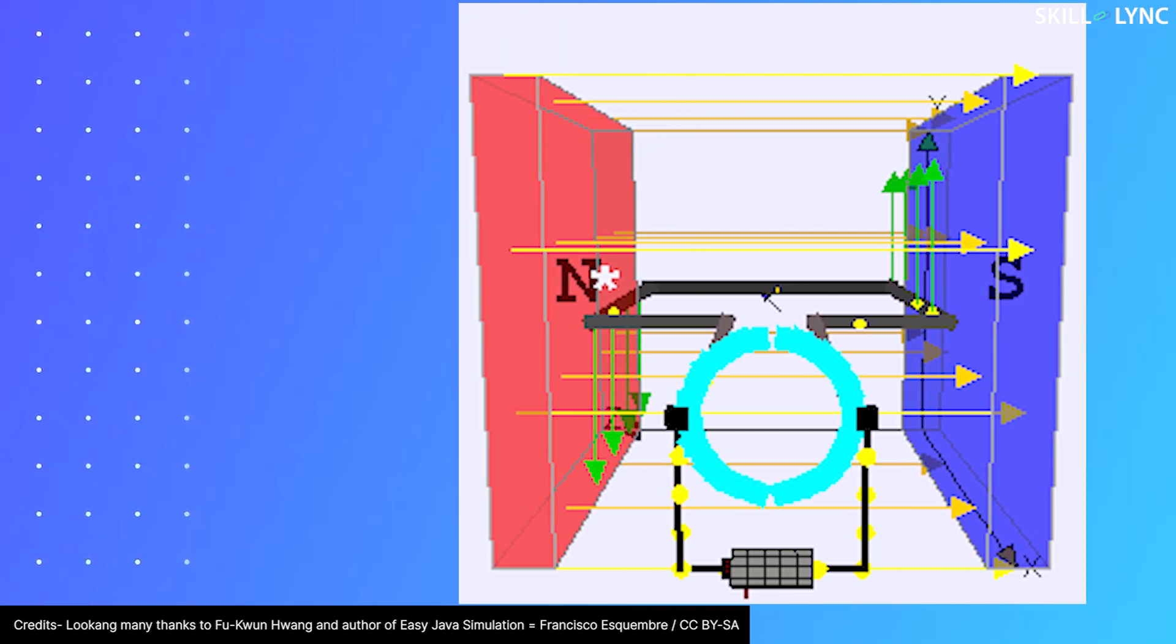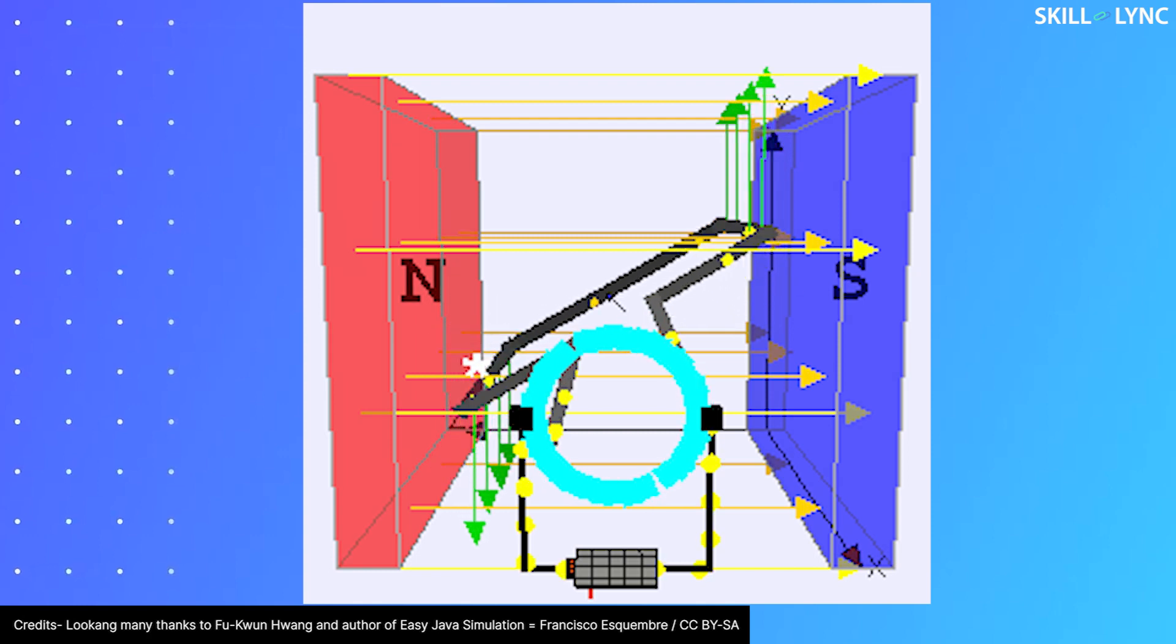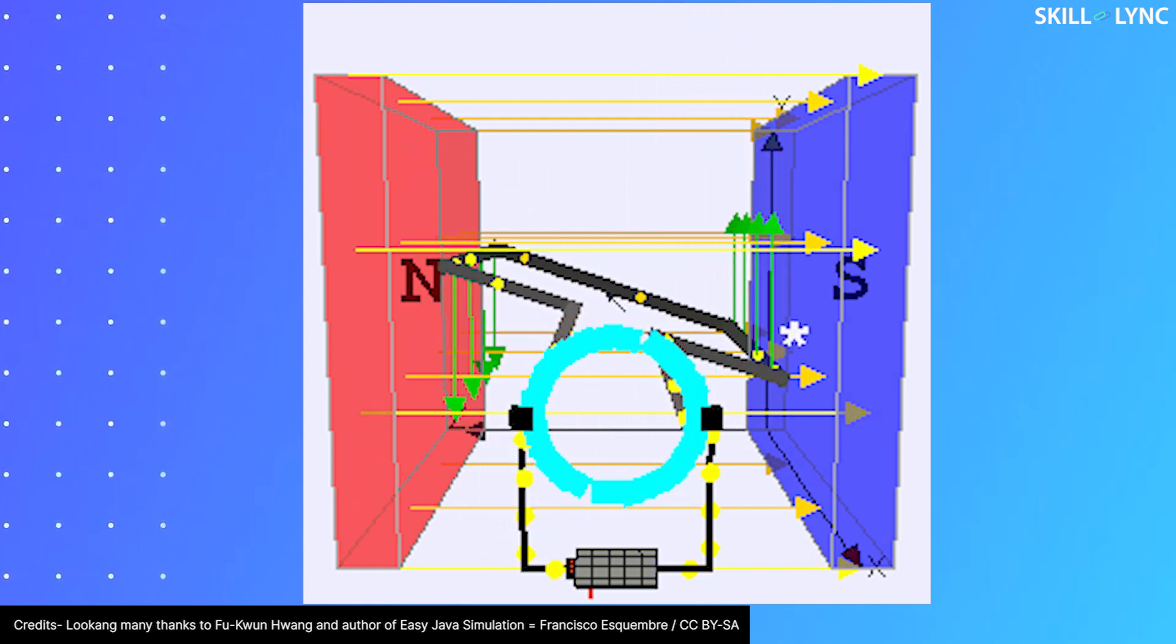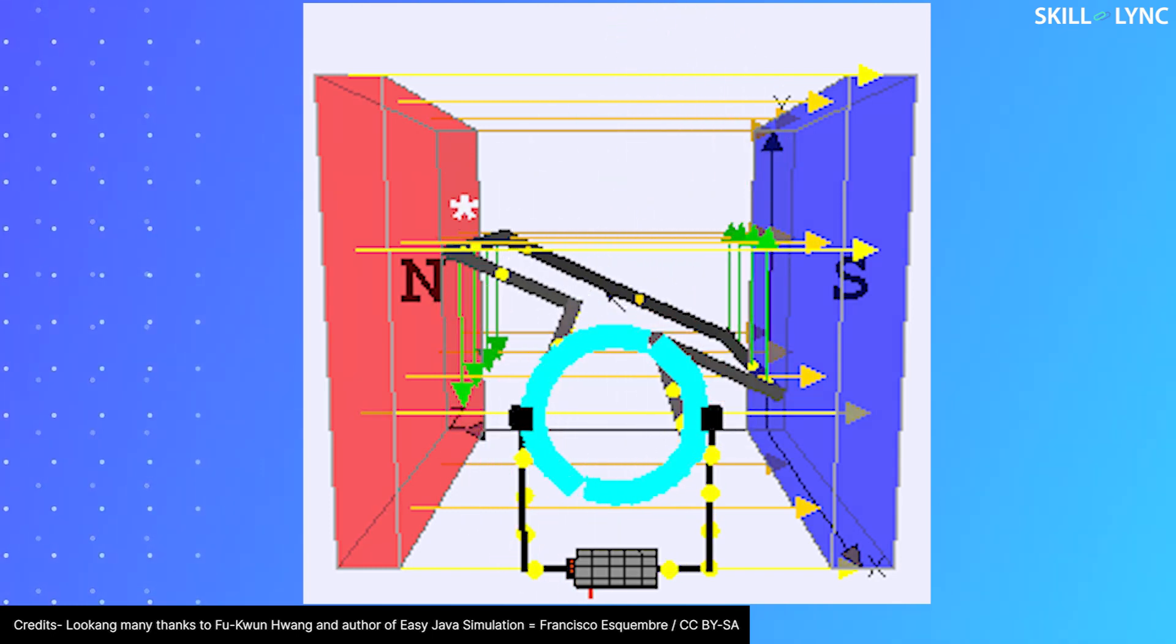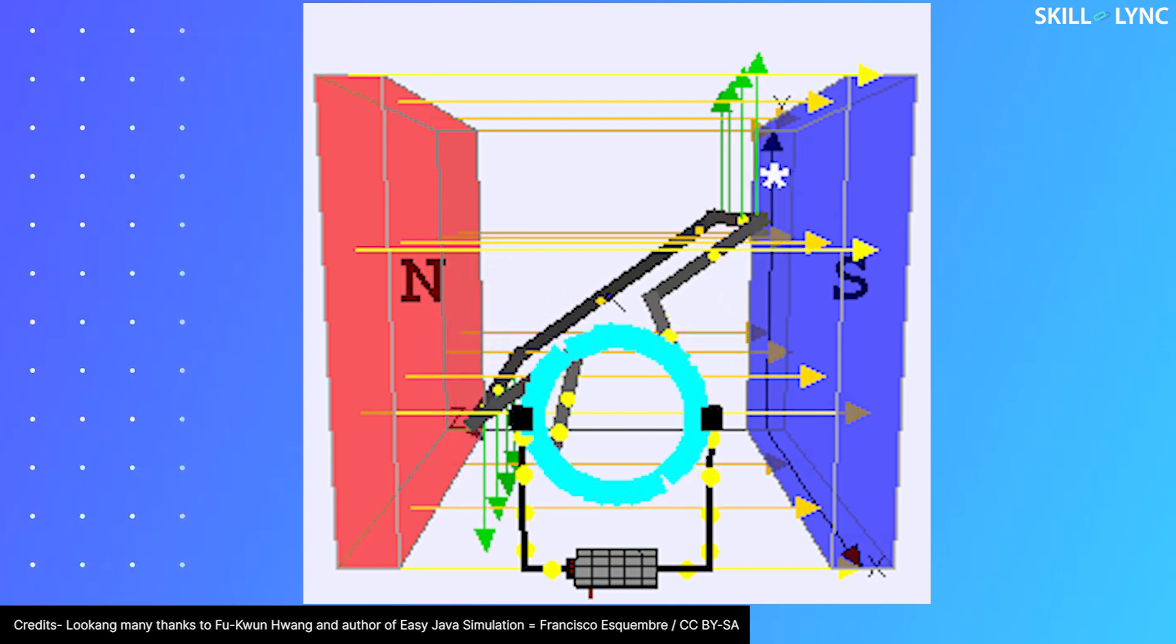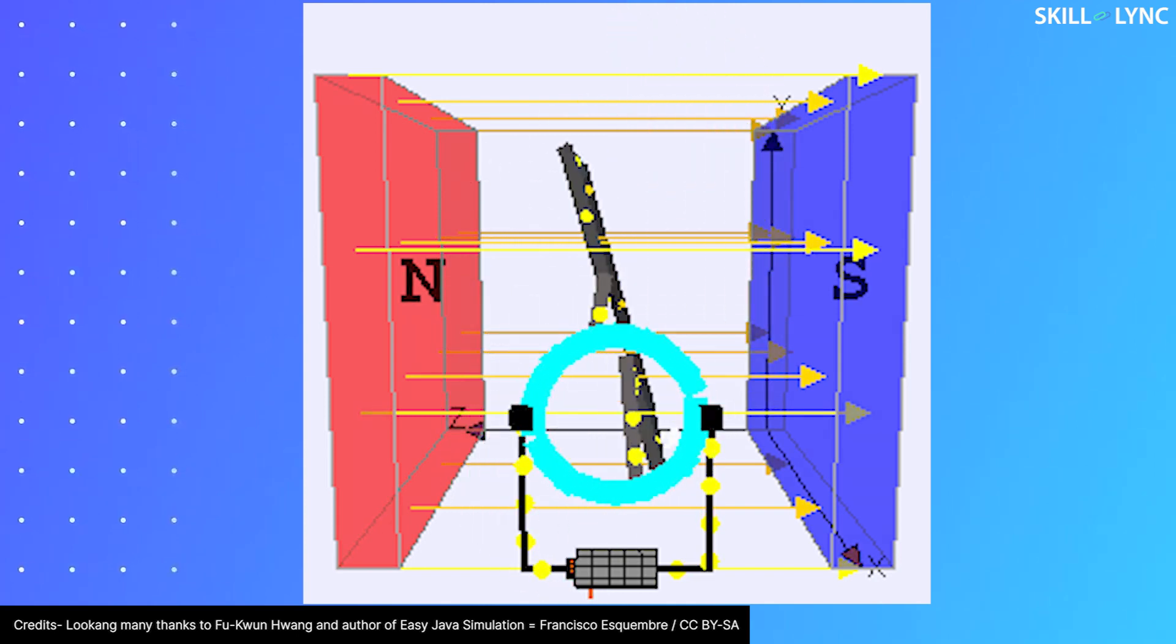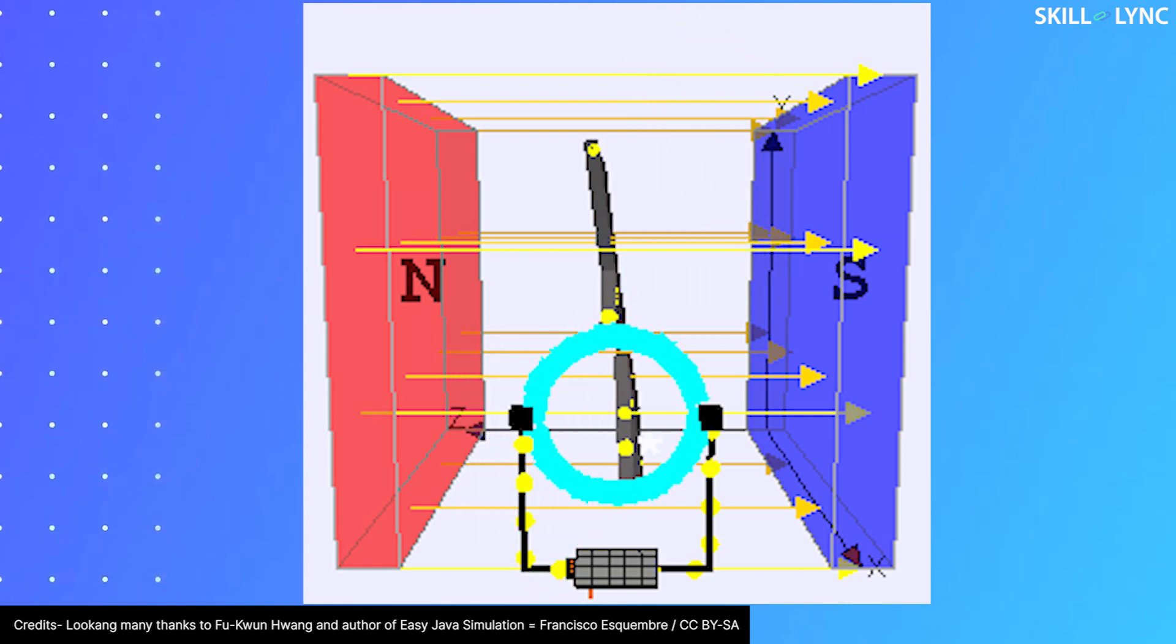In a DC motor, the armature is connected with an electric source such as a battery or a DC power supply. Because of the electric field in the conductor, the armature experiences a force according to Lorentz's law, which states that an electrically charged conductor in a magnetic field experiences a force. This makes the armature rotate, thus electrical energy gets converted into mechanical energy which is given by the movement of the armature.